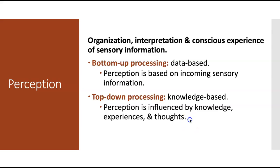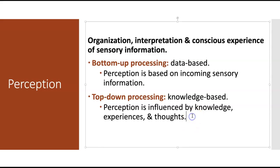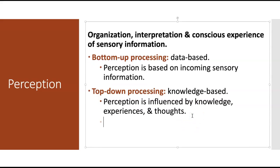For example: if I put two lines on a page with no context, and you see that as just two lines, you're using bottom-up processing — you're looking at what's there and saying all you see are two lines. You can't make any more meaning out of that. You're using the data in front of you.